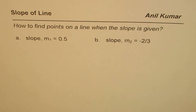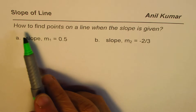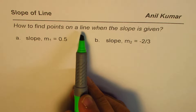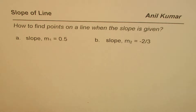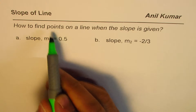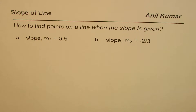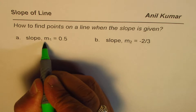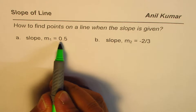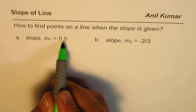I'm Anil Kumar and in this video we'll investigate the slope of a line. The question we are going to answer is: how to find points on the line when the slope is given to us. Normally with given points we were trying to find the slope, so this is kind of a reverse calculation. In this example we are given the slope — for the first one we have a slope of 0.5.